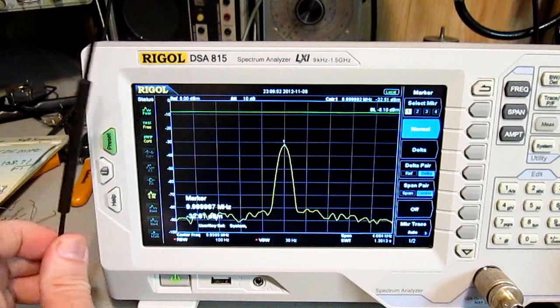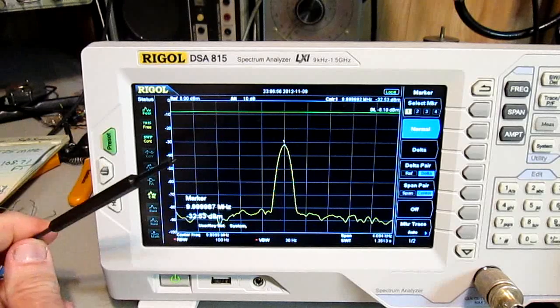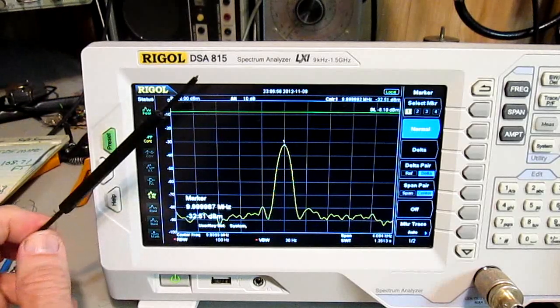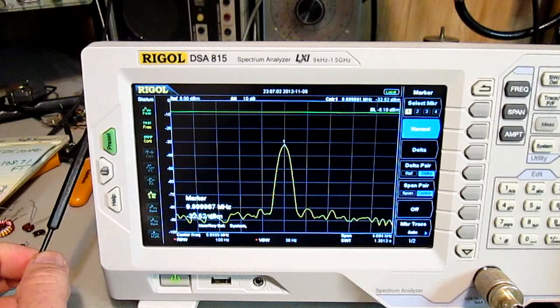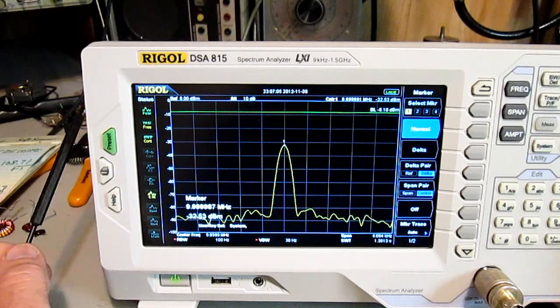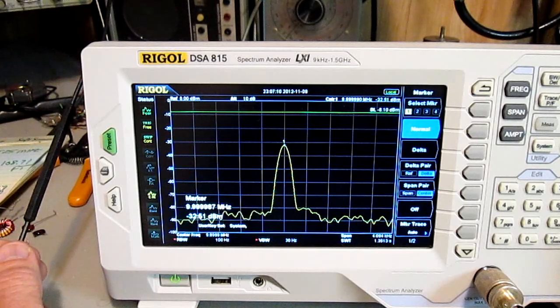But anyway, that's what I wanted to show you, is that there is a frequency counter built into the Rigol DSA815 and it certainly seems to be a more accurate method by which to measure a frequency that you're looking at versus trying to use the marker and move it around and set it and get it to come out correct that way.